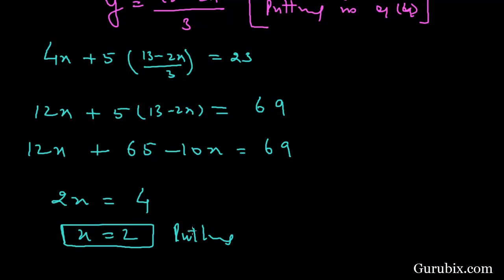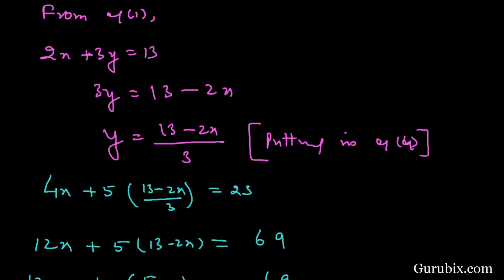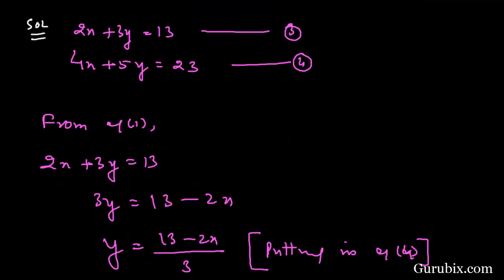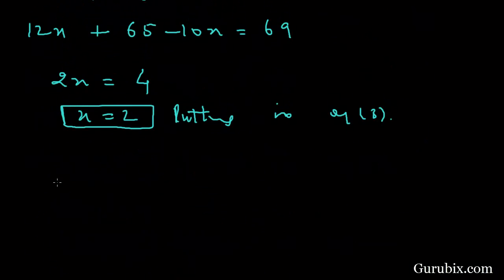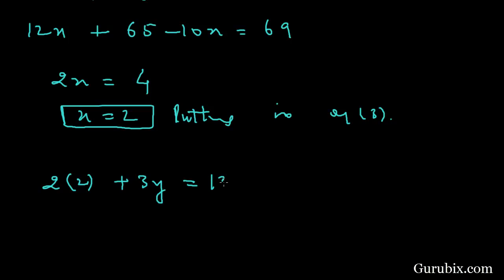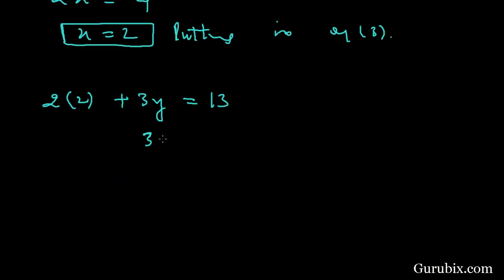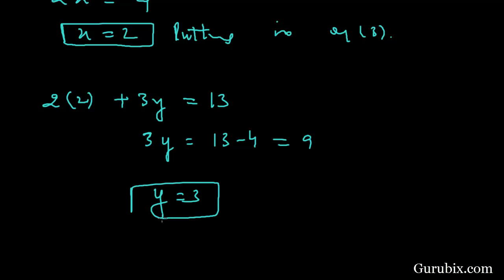Now we substitute x = 2 into equation number 3: 2(2) + 3y = 13, so 4 + 3y = 13, giving 3y = 9, and therefore y = 3. So the solution of the question is x = 2 and y = 3. Thank you.